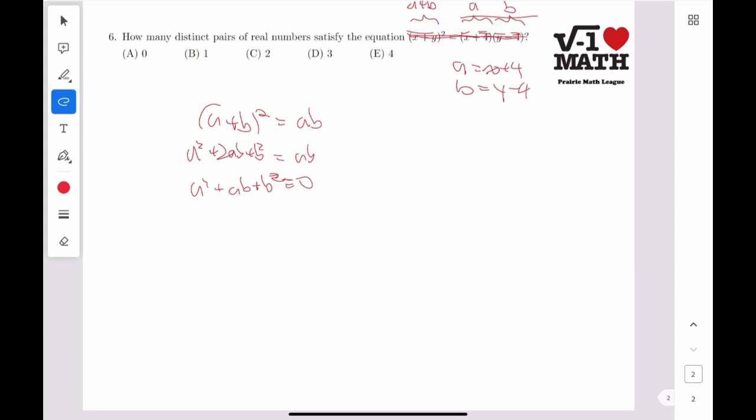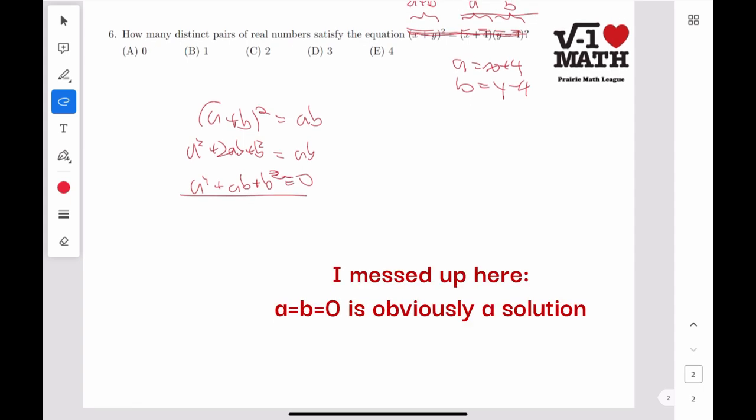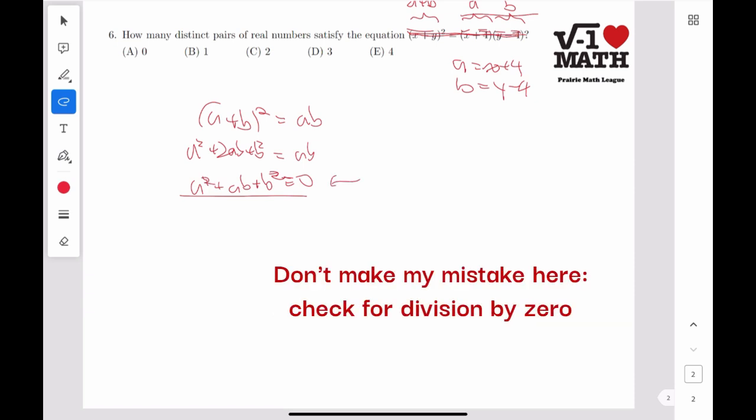Now this is quite obvious that this has no solutions, but if you aren't convinced yet, at this point we can divide by b squared to make this a polynomial expression of one variable.